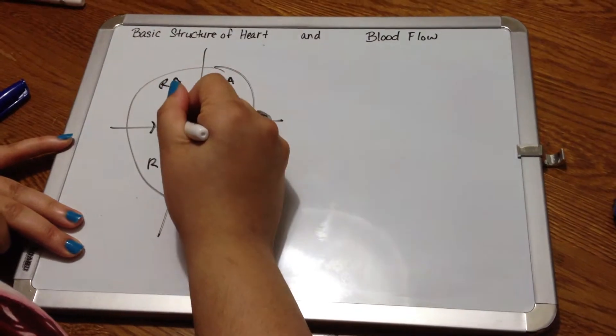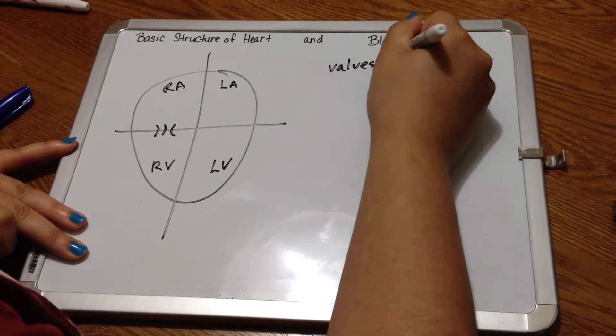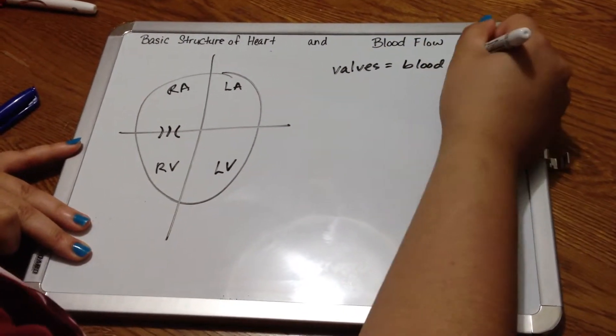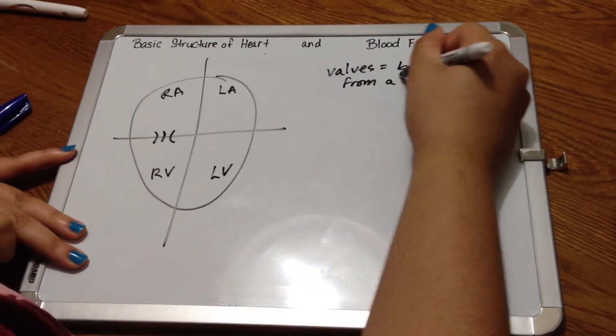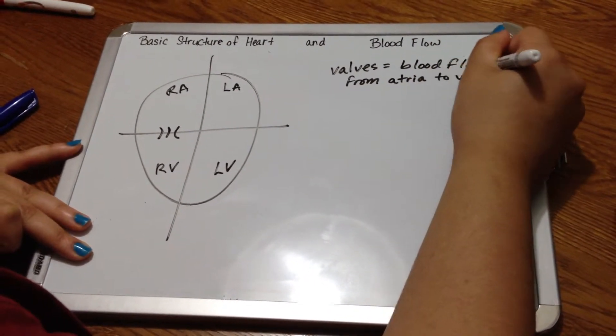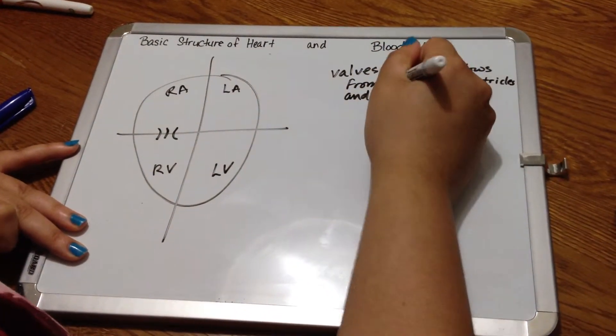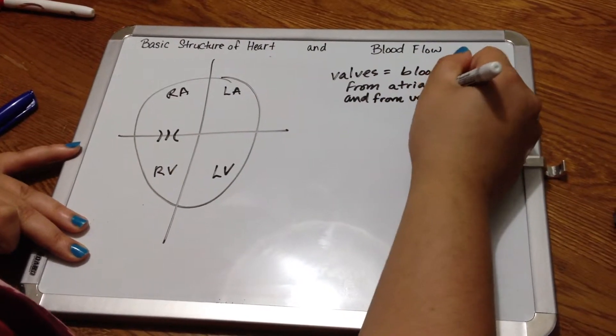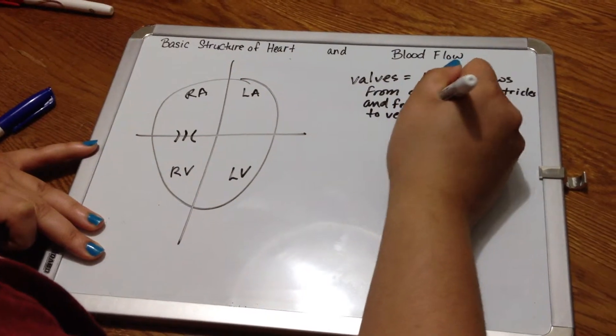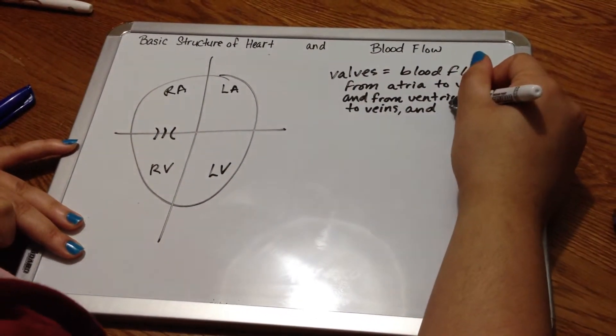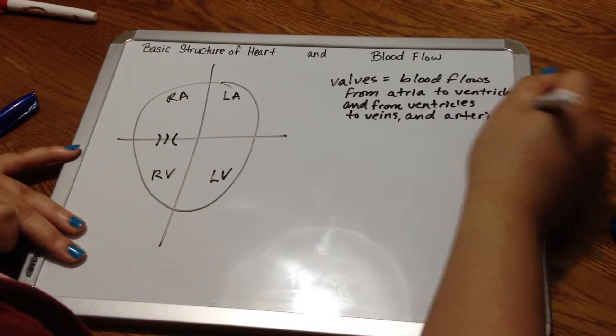Now we're going to represent valves. Valves tend to be like little bridges that allow blood to flow. Blood flows from an atrium, or atria, to the ventricles, veins, and from ventricles to veins, and you also have it flowing from arteries to atria.